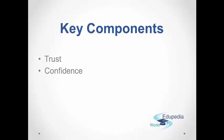According to a study by the Hay Group, which is a global management consultancy, trust and confidence in top leadership was the single most reliable predictor of employee satisfaction in an organization. Effective communication by leadership in three critical areas was the key to winning organizational trust and confidence. These three areas are: helping employees understand the company's overall business strategy; helping employees understand how they contribute to achieving key business objectives; and sharing information with employees on both how the company is doing and how an employee's own division is doing relative to strategic business objectives.